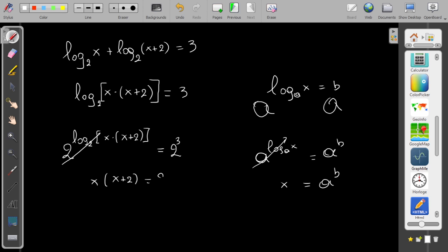Okay, so X² + 2X - 8 = 0, and then I can solve it and find my solutions. X equals 2 and X equals -4, and that's how I can solve logarithmic equations.